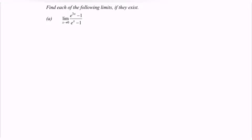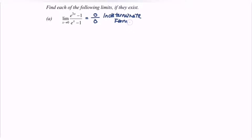Hello everyone, in this video I'm going to discuss the topic of limits and continuity. Here is an example of the indeterminate form. First, we are going to substitute the value 0 into the function. We can see that e to the power of 0 is equal to 1, so the numerator gives 1 minus 1 equals 0, and the denominator also gives e to the power of 0 minus 1, which equals 0. So this case is considered an indeterminate form.